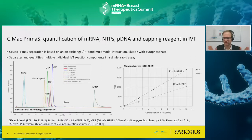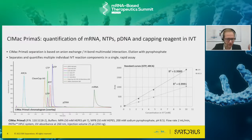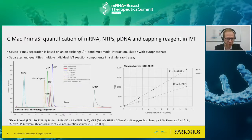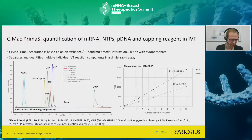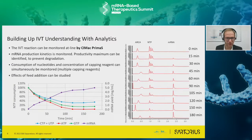As an analytical tool, this is one of the best solutions to tracking an IVT reaction. I show on the left a typical chromatogram - a standard injection of standards where we tested ARCA, CleanCap AG, all the NTPs, plasmid, and mRNA, and they all get separated. CTP and UTP co-elute in the current method, but in principle we can separate all key IVT components, with signals nicely scalable. I would like the community to unleash their creativity - I'll show two examples of how we see this being useful to optimize an IVT reaction.